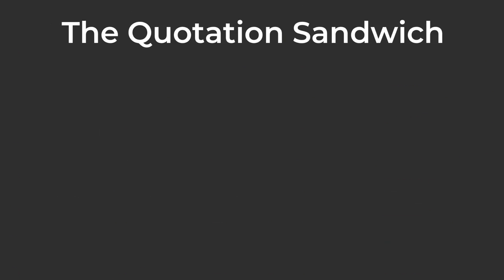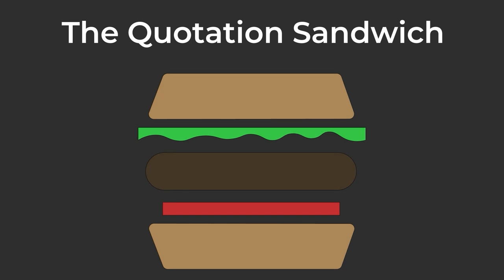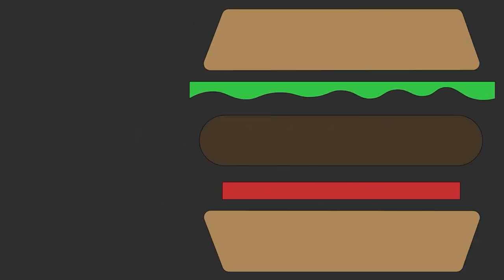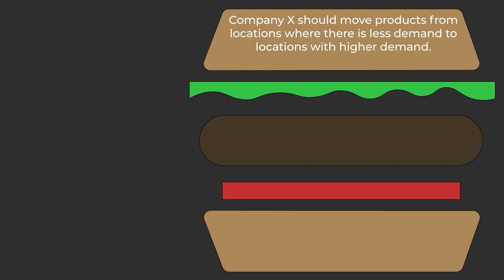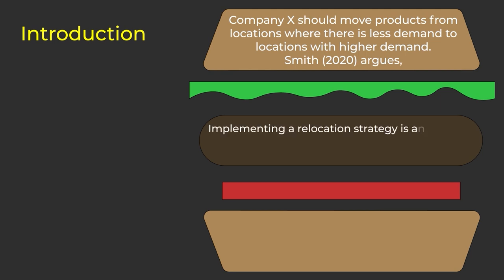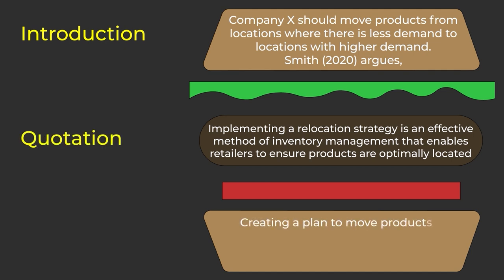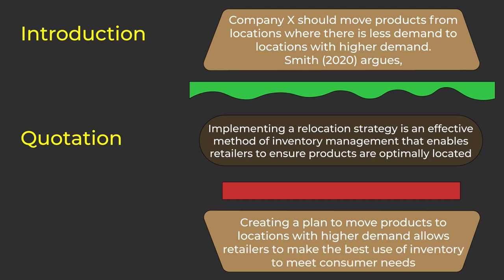The quotation sandwich. Some teachers use a sandwich model to describe how we should structure quotations. First, an introduction in your words. Then the quotation to support the point. And finally, a conclusion in your own words to comment on the point. Here's a quotation sandwich: "Company X should move products from locations where there is less demand to locations with higher demand" — that's our introduction. Smith (2020) argues: "Implementing a relocation strategy is an effective method of inventory management that enables retailers to ensure products are optimally located." Creating a plan to move products to locations with higher demand allows retailers to make the best use of their inventory to meet consumer needs — and that was the conclusion.